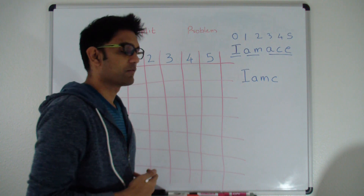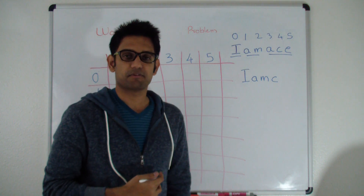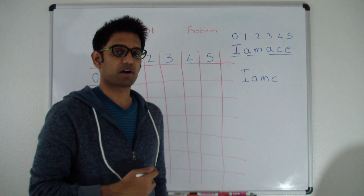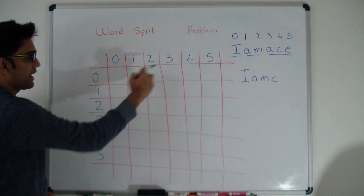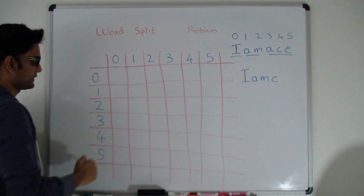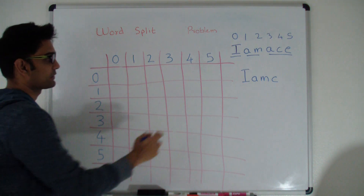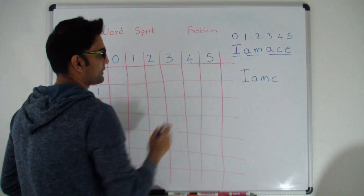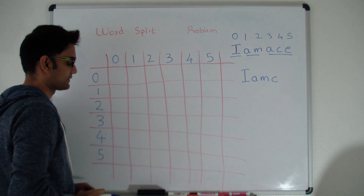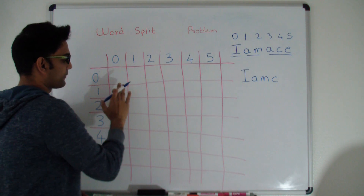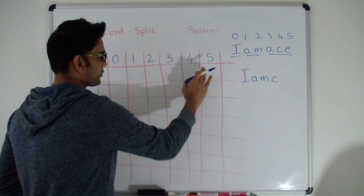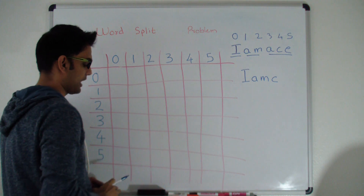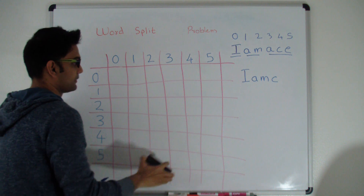So how do we solve it? We will use dynamic programming. I have a 6 by 6 matrix because the size of our string is 6. I'll fill up this matrix and at the top right corner we'll have our answer.